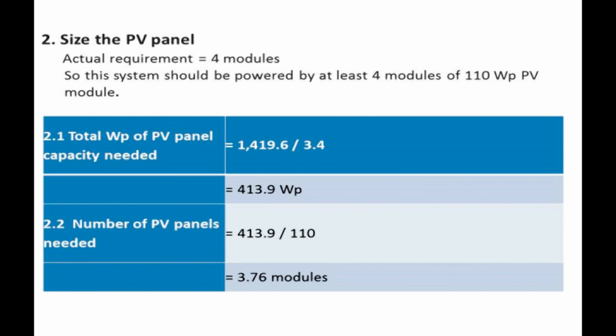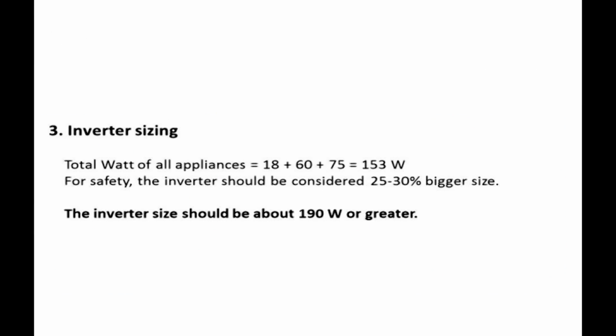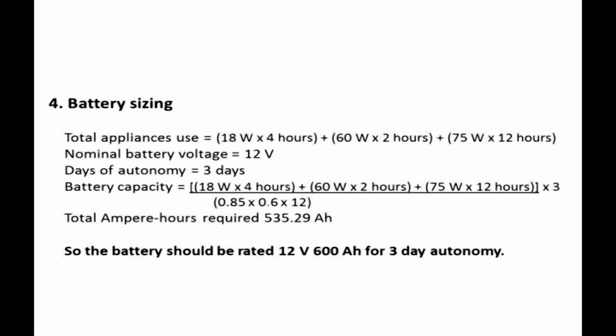Step 2.2: Number of PV panels needed = 413.9 ÷ 110 = 3.76 modules; actual requirement = 4 modules. So this system should be powered by at least 4 modules of 110 Wp. Step 3: Inverter sizing. Total watts of all appliances = 18 + 60 + 75 = 153 W. For safety, the inverter should be 25–30% bigger, so the inverter size should be about 190 W or greater.